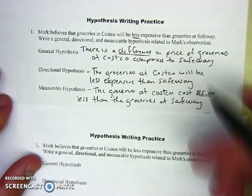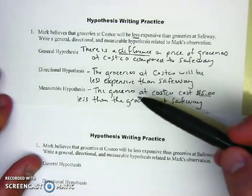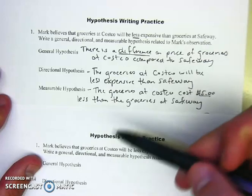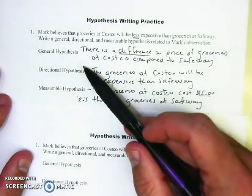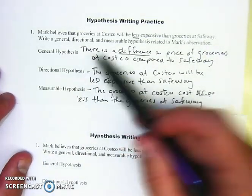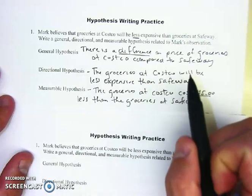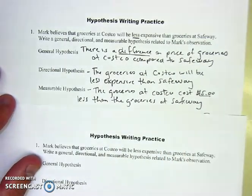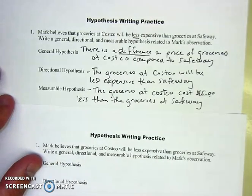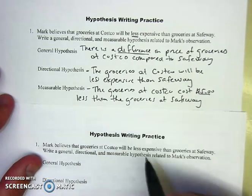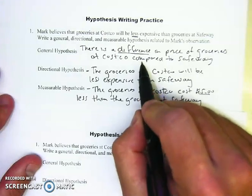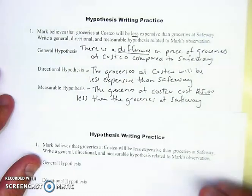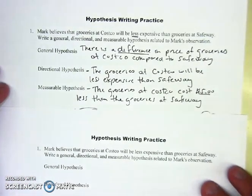Once you do this process, at the end of the experiment you start ruling whether you agree or disagree with the hypotheses. When you're very general, it's very easy to agree with something. Think of how you write test answers when you don't know the answer — you're not going to write something specific; you want the teacher to think maybe you'll get points because you're being vague. That's how a general hypothesis works as well.